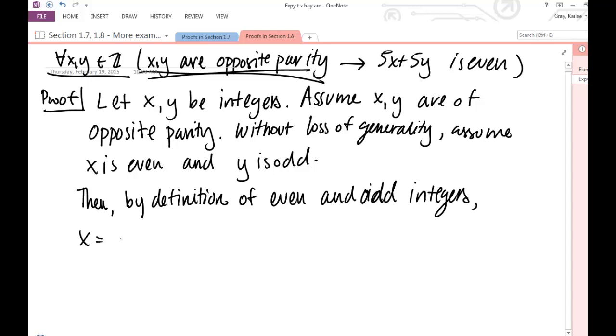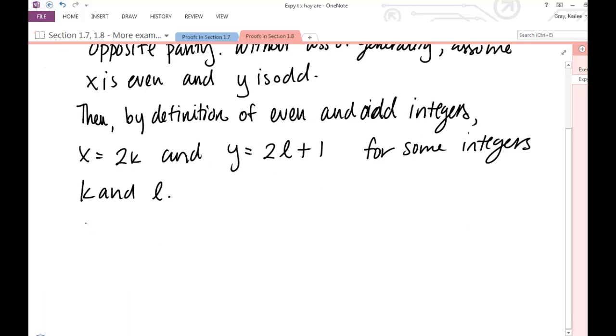And again, it doesn't matter which case we choose here. We're going to get the same sort of result. So we've made our assumption clear and why we're just running into one case here. I'm going to go ahead and apply the definitions of even and odd integers. Definition of even and odd integers. X is equal to 2k and y is equal to 2l, different variable for some integers, k and l.